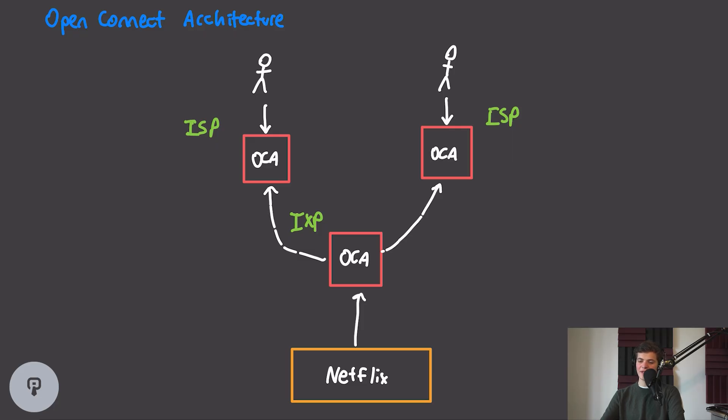Alright, so now let's dive into how the Open Connect architecture actually works, and how all of these nodes can communicate with each other to effectively build an optimal network. So, the first thing that we have to think about is how the data is actually going to get into these Open Connect appliances.